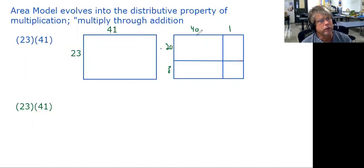So 20 times 40 would be 800. 20 times 1 would be 20. And then 3 times 40 would be 120. And then 3 times 1 would be 3.